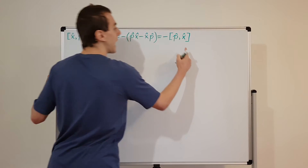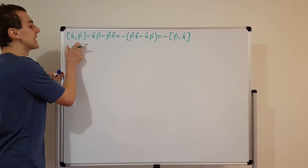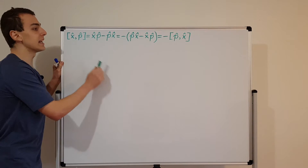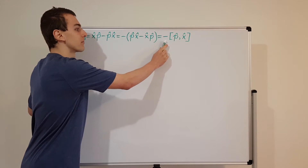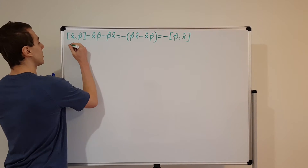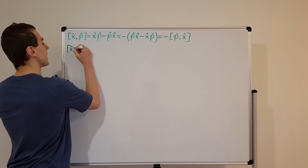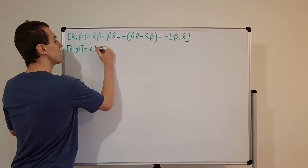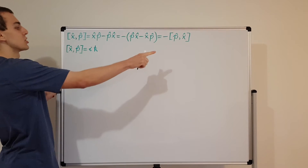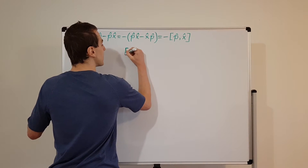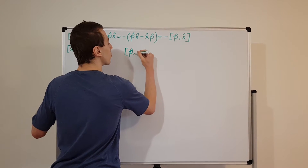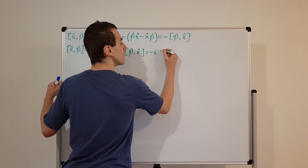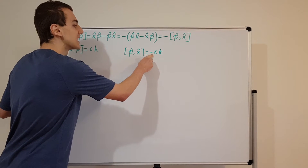We can write it as minus the commutator of momentum and position. This relationship is sometimes called anti-symmetry — the commutator is anti-symmetric, because if you swap the order of the two operators inside the commutator, it introduces a minus sign out the front. So what is this actually equal to? The commutator of position and momentum is equal to iℏ, as we found in the previous video.